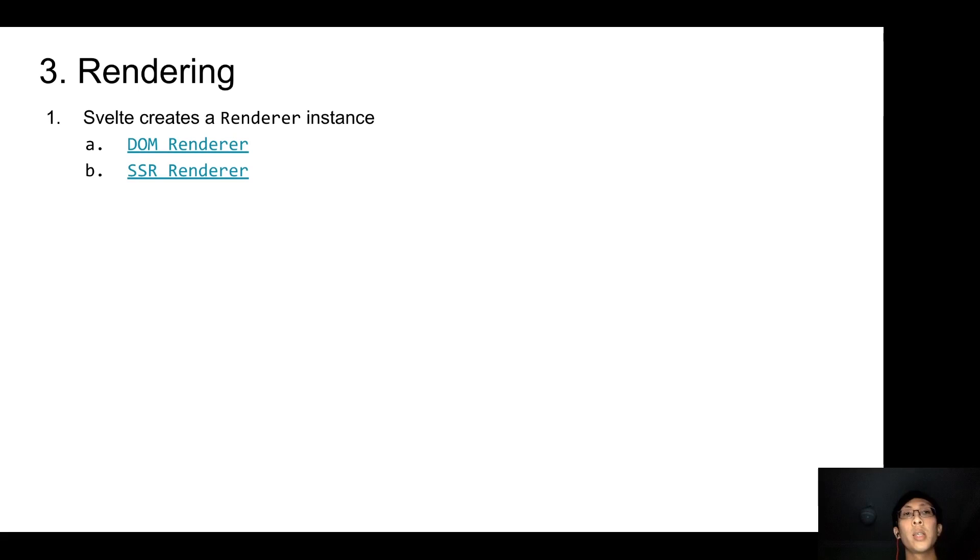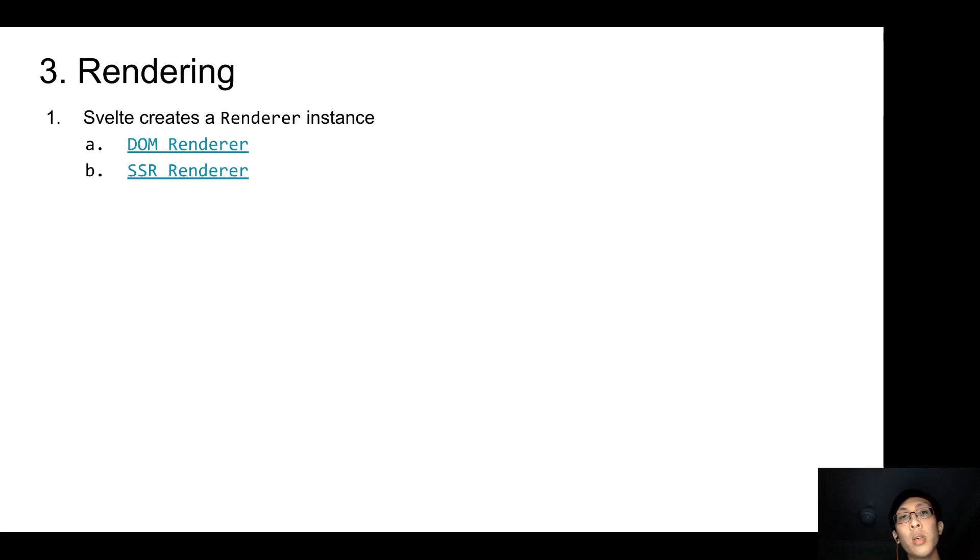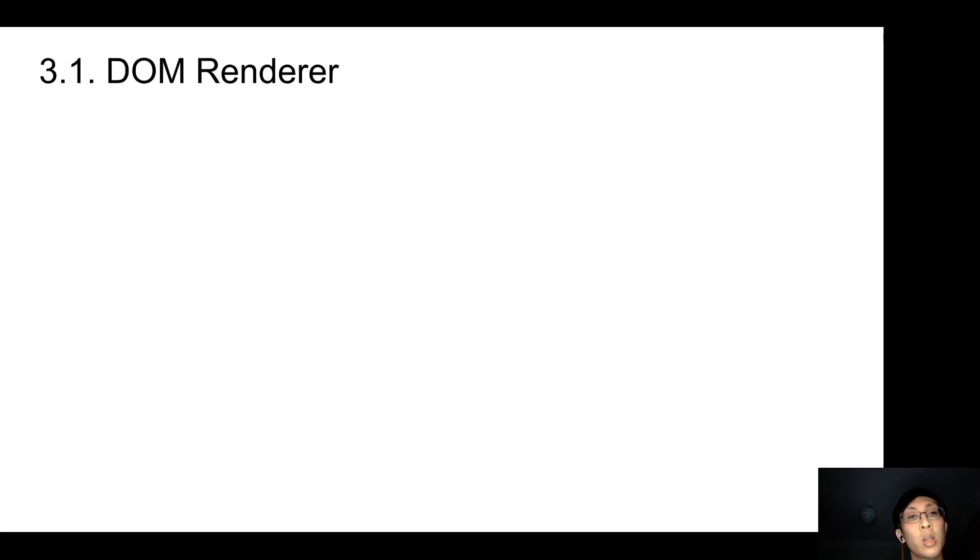The next step is to generate the output code. In this step, Svelte will create a renderer instance to do the job. Depending on the compile options, Svelte will either create a DOM renderer for client-side rendering or SSR renderer for server-side rendering. Let's first look at the DOM renderer. This will be the final output using the DOM renderer.